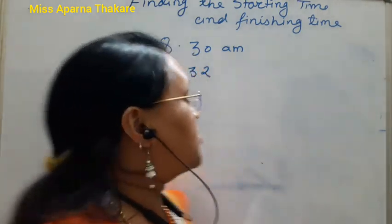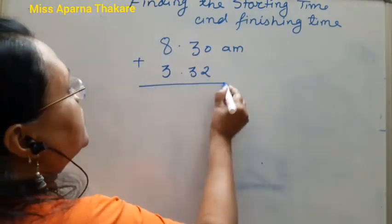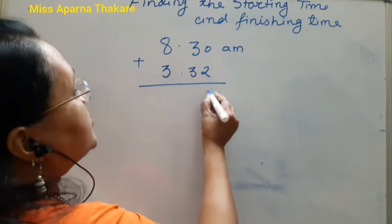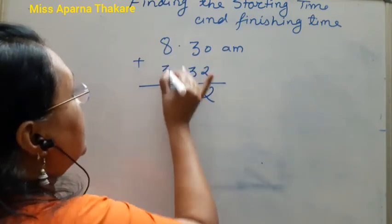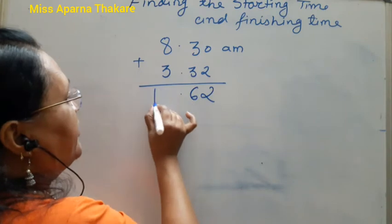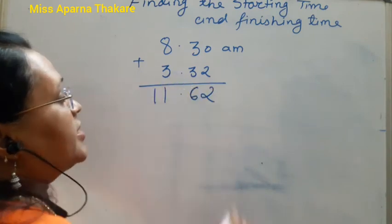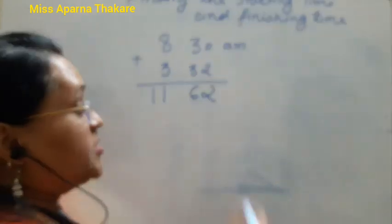So we add the two times. 30 plus 32 gives 62 minutes, and 8 plus 3 gives 11 hours. So we get 11 hours 62 minutes.